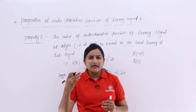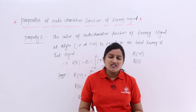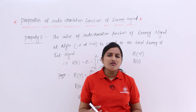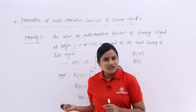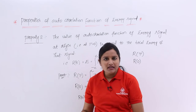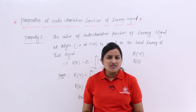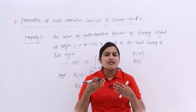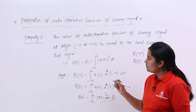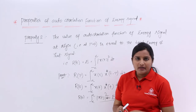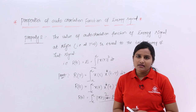The same property will repeat for power signals. That means if the signal is a power signal, the autocorrelation function at τ equal to 0 will give you the power of the signal. Here, since we are considering energy signals, all these properties are for energy signals. So if the signal is an energy signal, the value of the autocorrelation function at τ equal to 0 gives you the energy. This is also a very important property, and in future we are going to apply this property to several problems to get easy solutions.